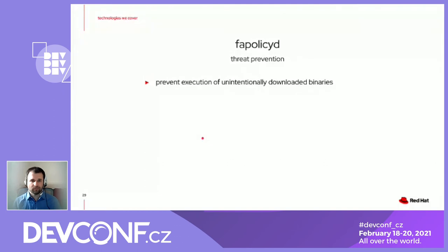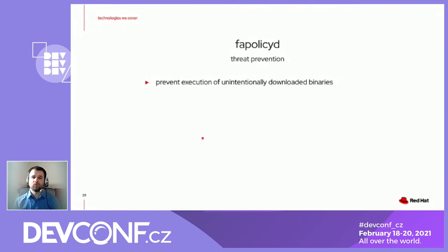What are the threat preventions for FAPOLICYD? This can prevent malware sent by email. Imagine you receive an email, you're not careful enough and click a link. There might be JavaScript which downloads some binary from the internet and tries to execute it. This is exactly how FAPOLICYD prevents execution, because otherwise the user would be able to execute such a binary. This is a nice way to prevent executing unwanted, unknown, potentially malicious binaries.